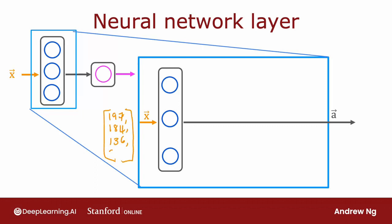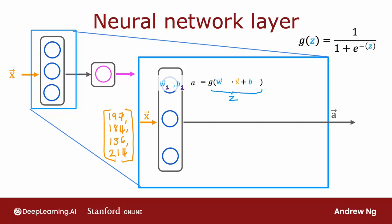Let's zoom in to the hidden layer to look at its computations. This hidden layer inputs four numbers, and these four numbers are inputs to each of three neurons. Each of these three neurons is implementing a little logistic regression unit. Take this first neuron — it has two parameters w and b, and to denote that this is the first hidden unit, I'm going to write these as w1 and b1, and it outputs an activation value a which is g of w1